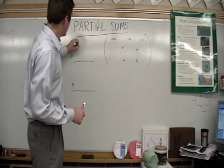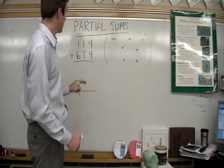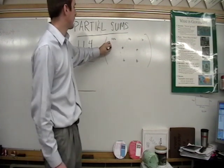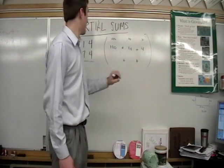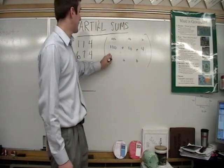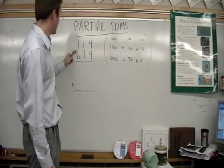We will take 114 plus 674. 114 is 100 plus 10 plus 4. 674 is 600 plus 70 plus 4. Add the parts.